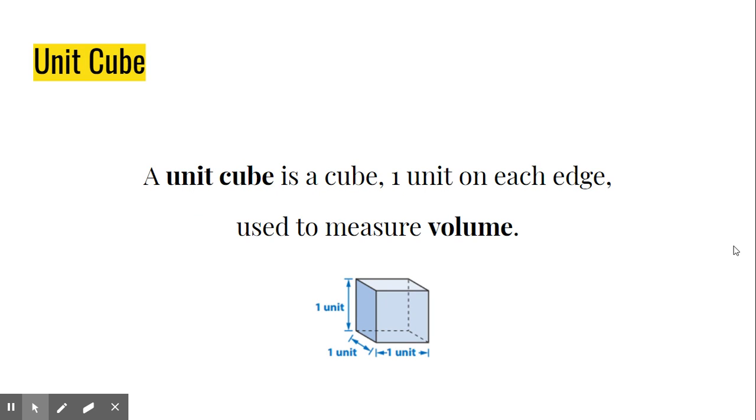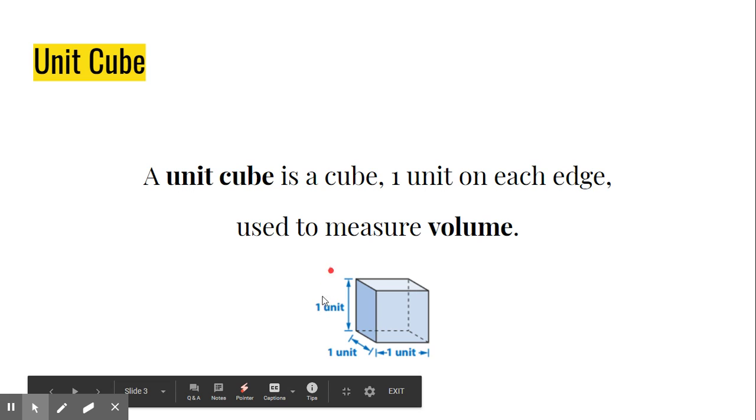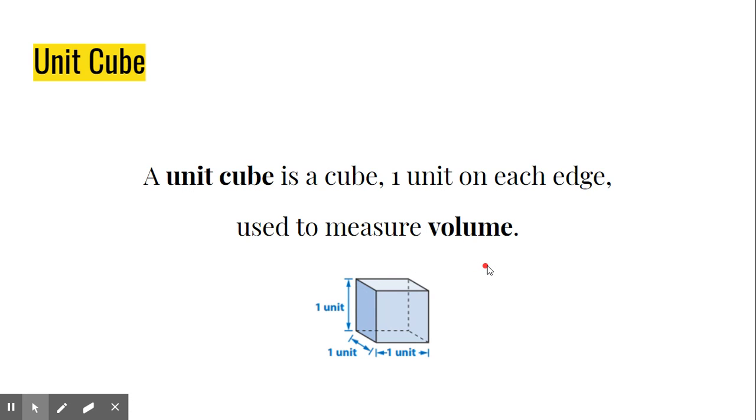So volume is measured with these things called unit cubes. And a cube is a three-dimensional square. A square, as you know, has all equal sides. So the same thing applies here to our unit cube. It's got an equal side of height and width and length. And basically just remember that every side on a unit cube is exactly the same, and that a unit cube is used to measure volume.